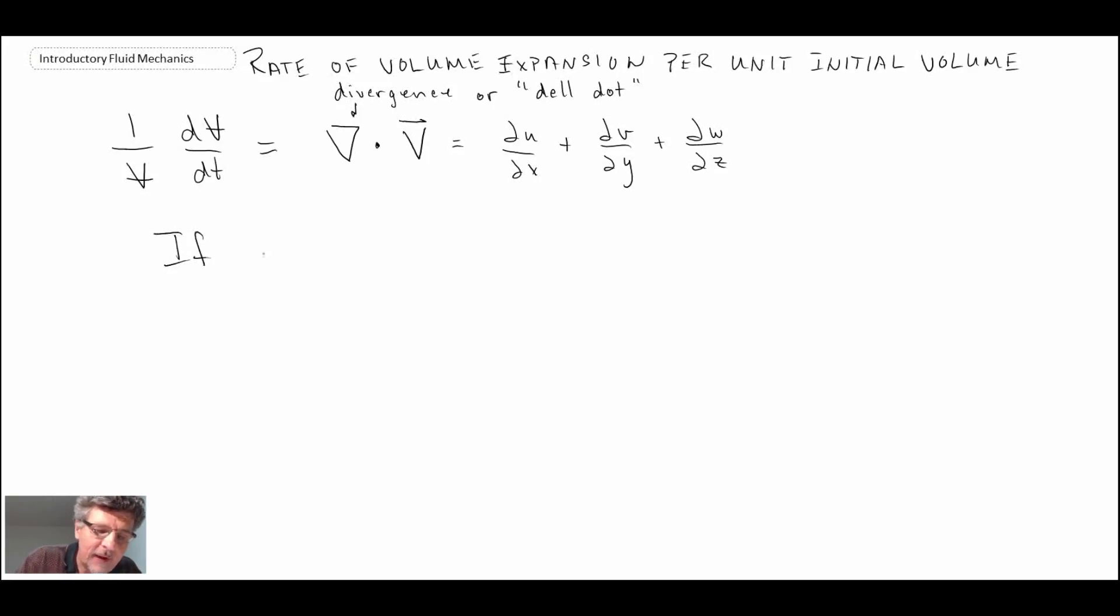If it turns out that we have a flow where del dot V is equal to zero, this would be the case where the volume does not expand or contract in the fluid flow, and that is what we would call incompressible. If you're dealing with a fluid mechanic problem and they say the flow is incompressible, that tells you immediately that del dot V is equal to zero. That is sometimes something you'll need to remember when dealing with incompressible problems.